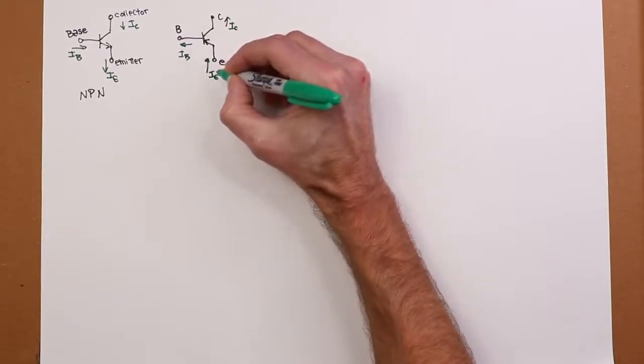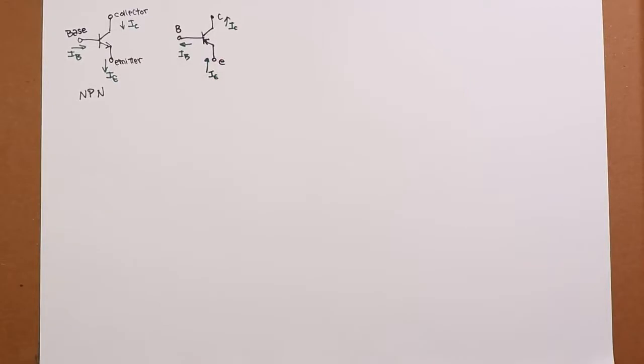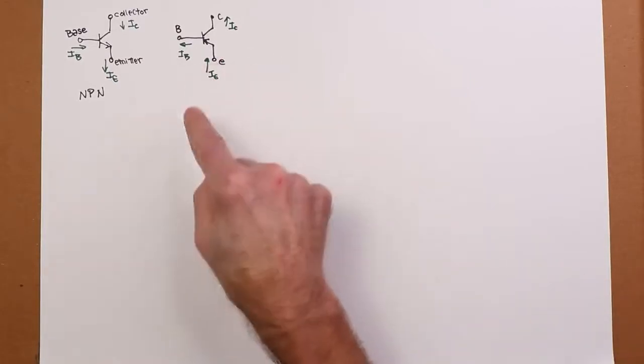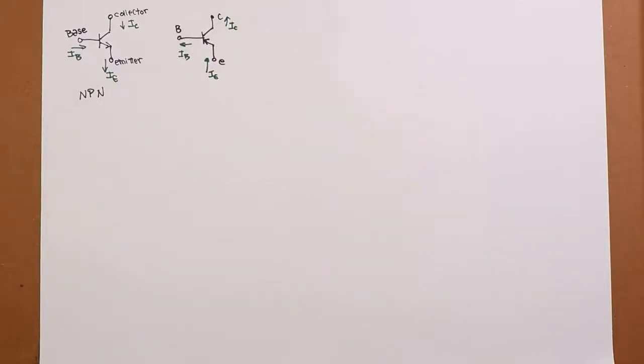So either way you look at it, Kirchhoff's current law is still true. In other words, IE emitter has to equal IB base plus IC the collector. That doesn't change.